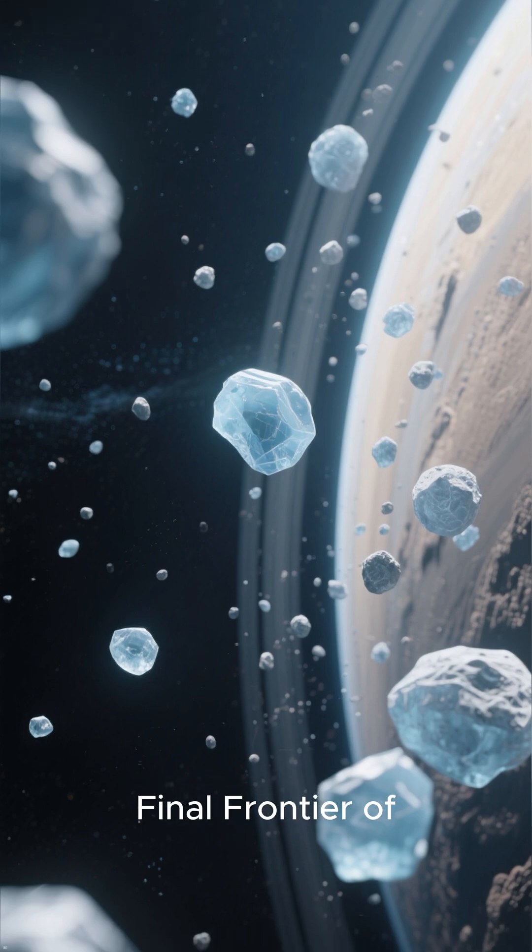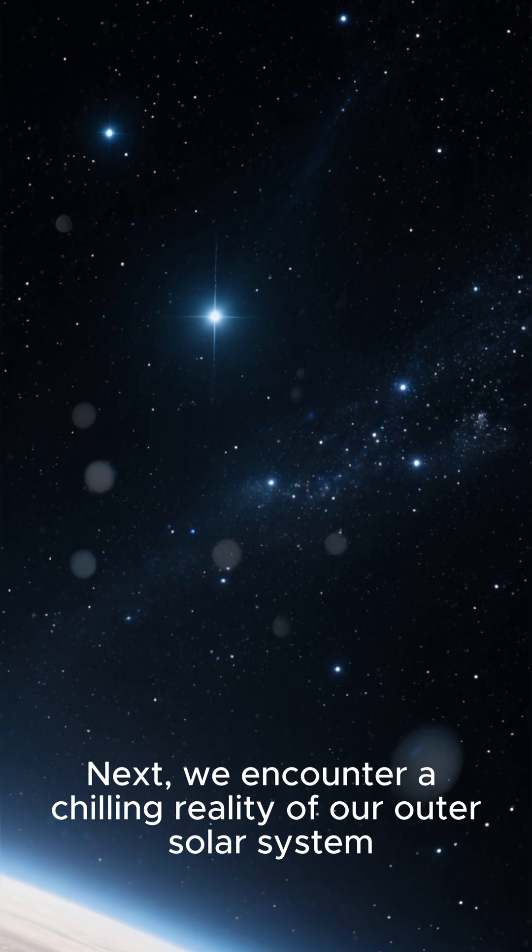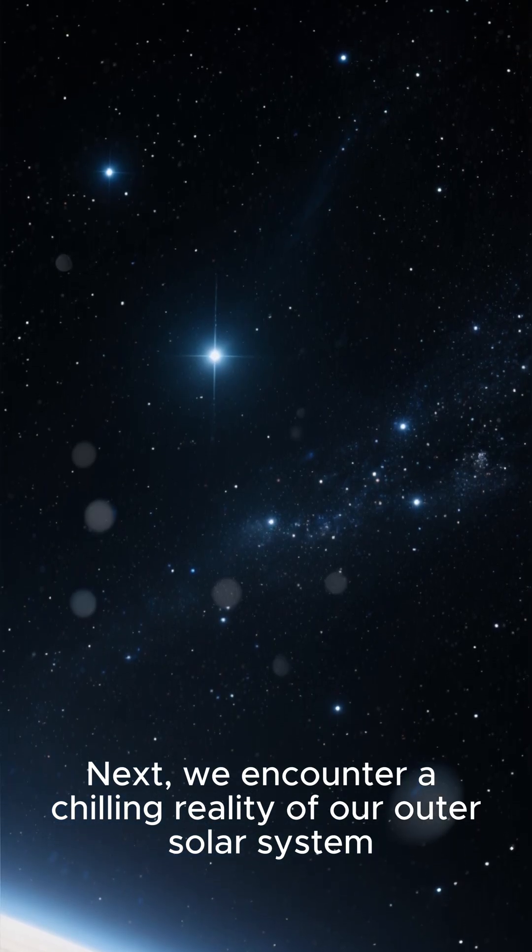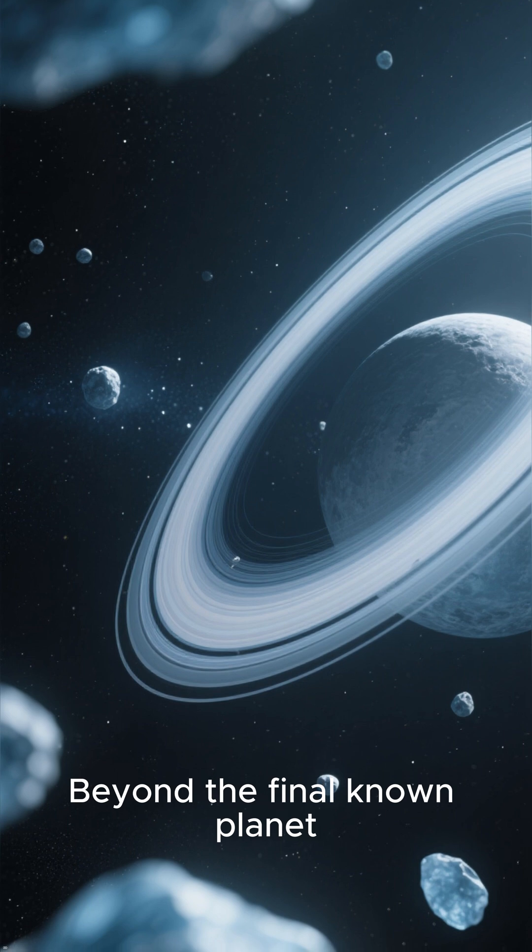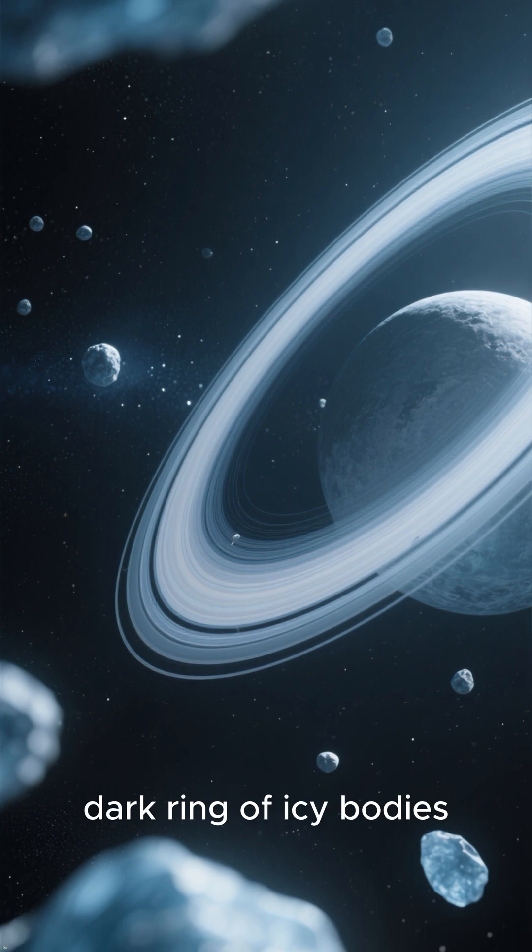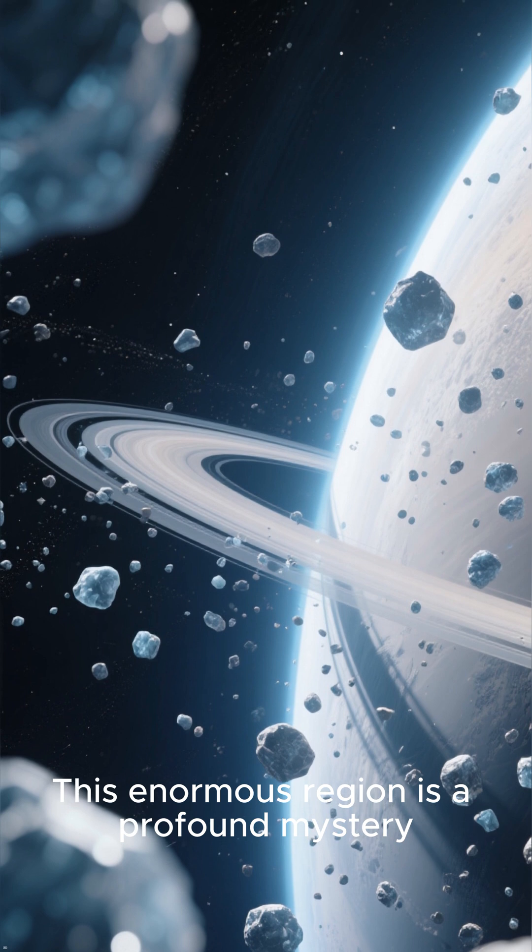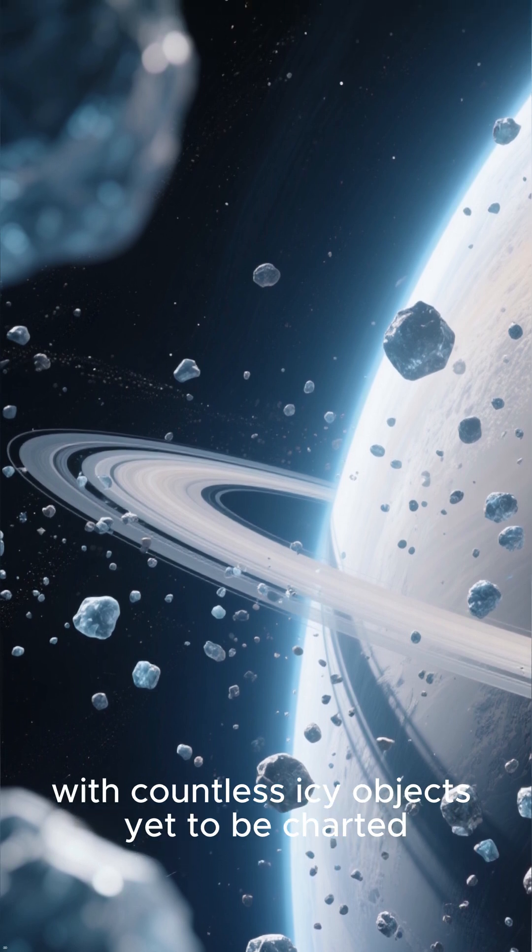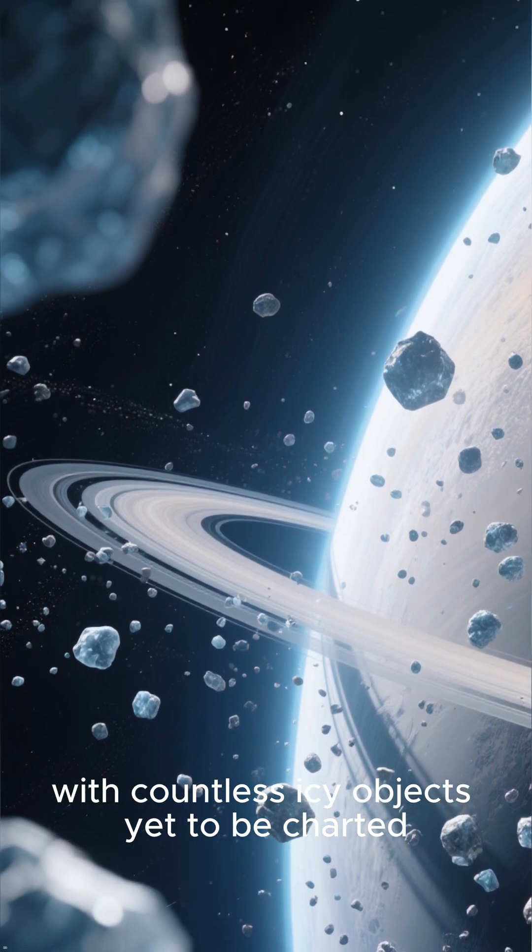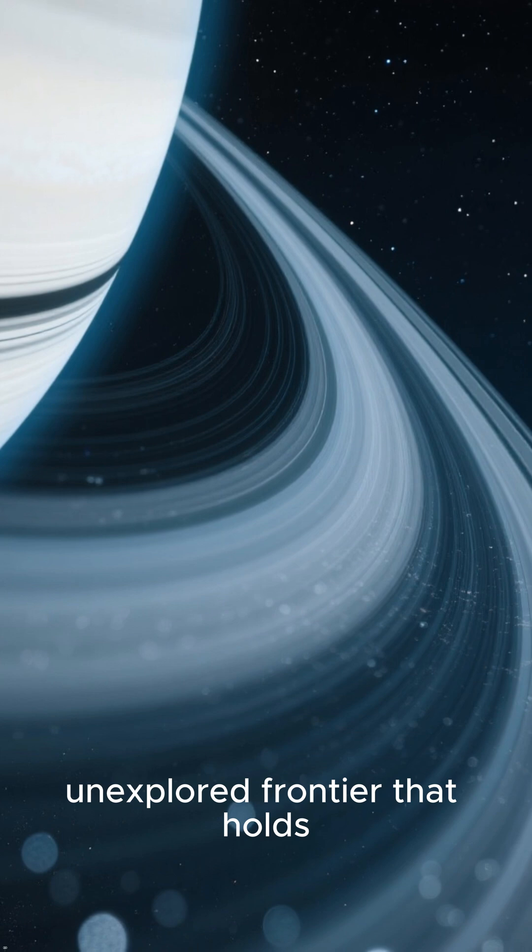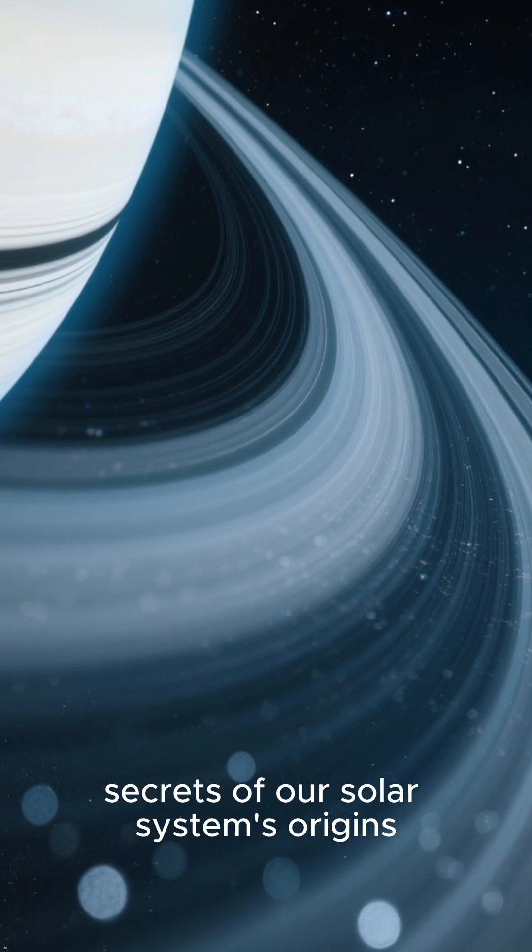Number 4: The Final Frontier of Ice. Next, we encounter a chilling reality of our outer solar system. Beyond the final known planet, there is a vast, dark ring of icy bodies, a cosmic graveyard known as the Kuiper Belt. This enormous region is a profound mystery, with countless icy objects yet to be charted. It is a terrifying, unexplored frontier that holds secrets of our solar system's origins.